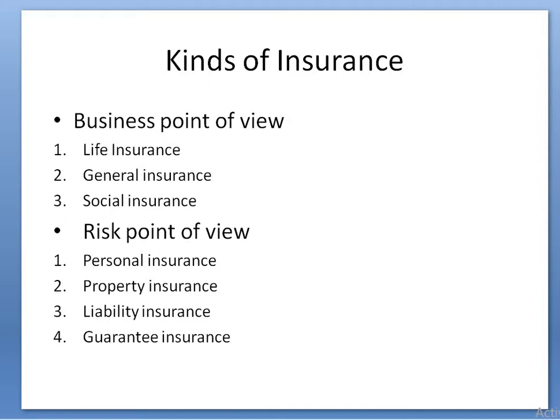This is the business point of view classification: life insurance, general insurance, and social insurance. From the risk point of view, the first category is personal insurance. Personal insurance consists of life insurance, personal accident insurance, and health insurance.